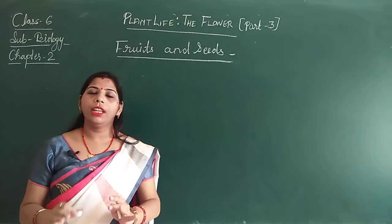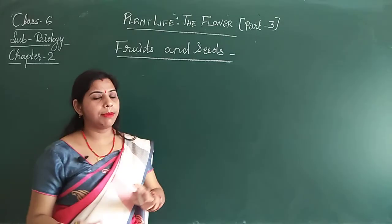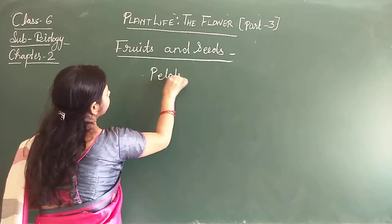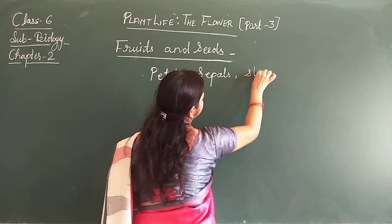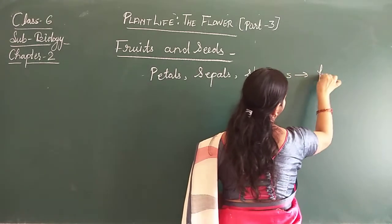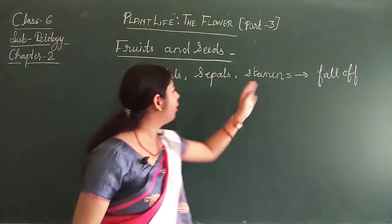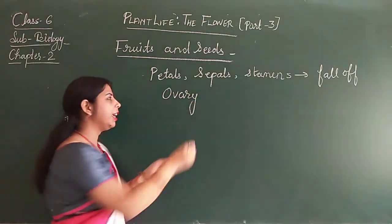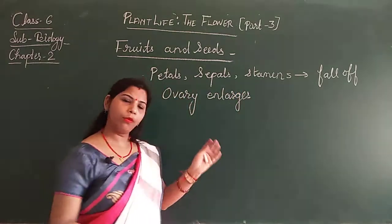So what happens? Except for the ovary, other parts of the flower like petals, sepals, and stamens dry up and fall off. After this, the ovary enlarges and forms the fruit.